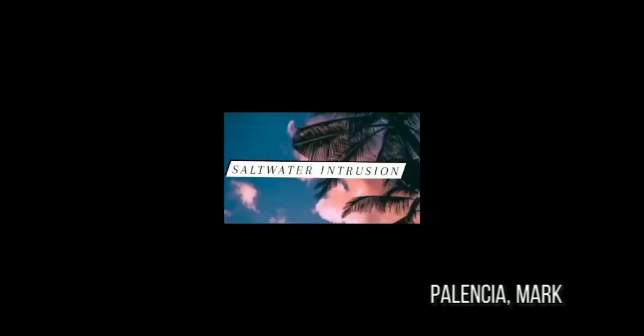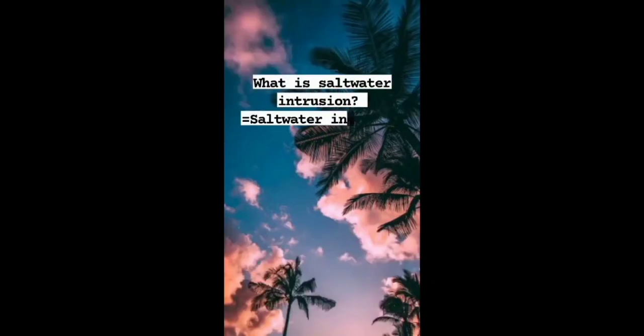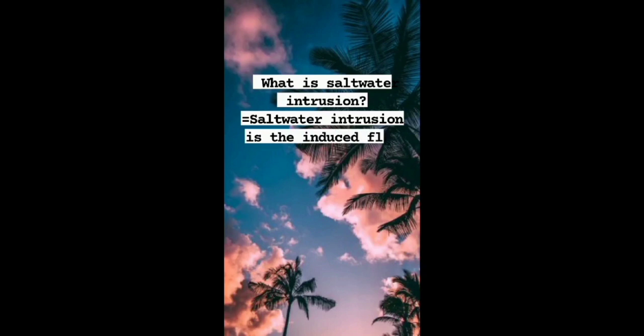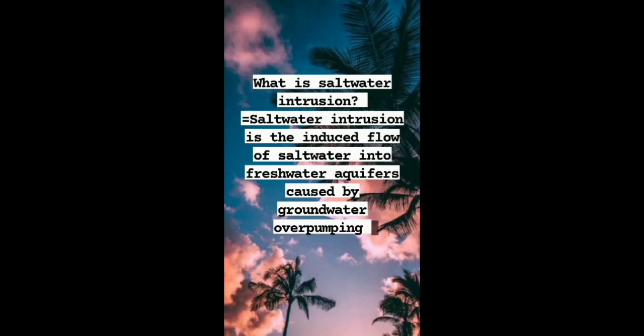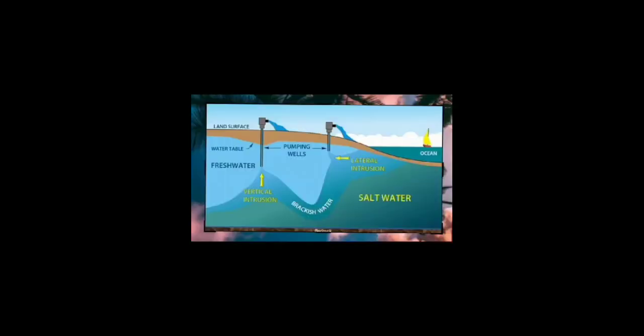Salt water intrusion is the induced flow of salt water into fresh water aquifers caused by groundwater over-pumping. Salt water intrusion can occur due to natural processes or human activities in aquifers adjacent to the coast and on islands. Fresh water floats as a lens above the salt water, forming a wedge that extends inland from the shoreline.